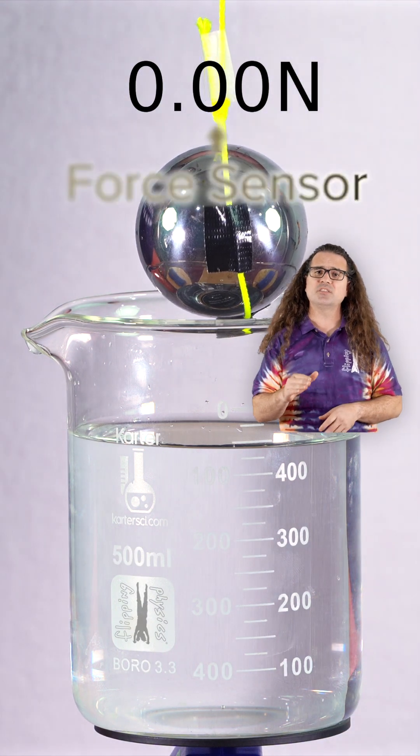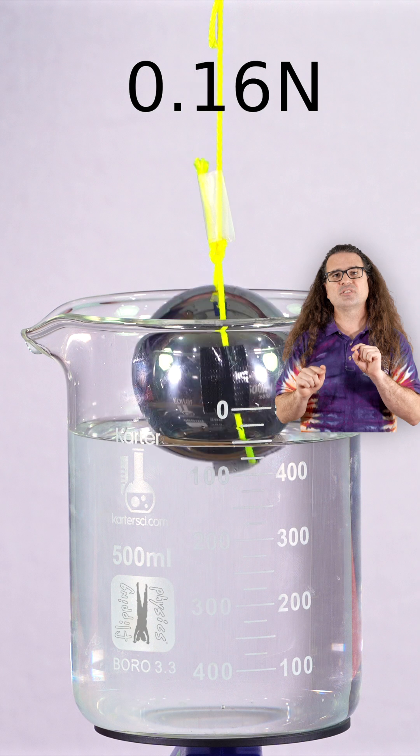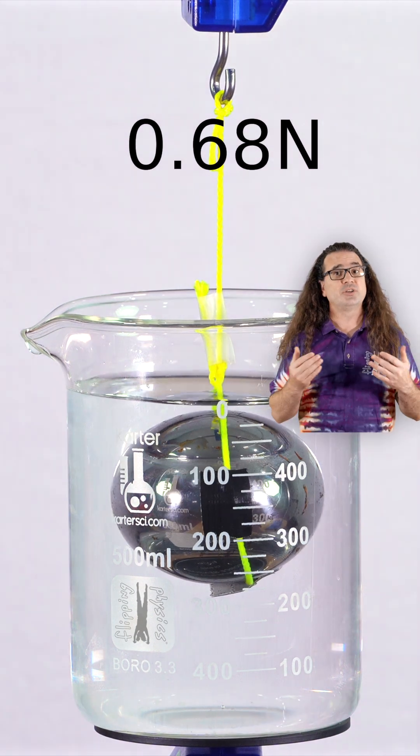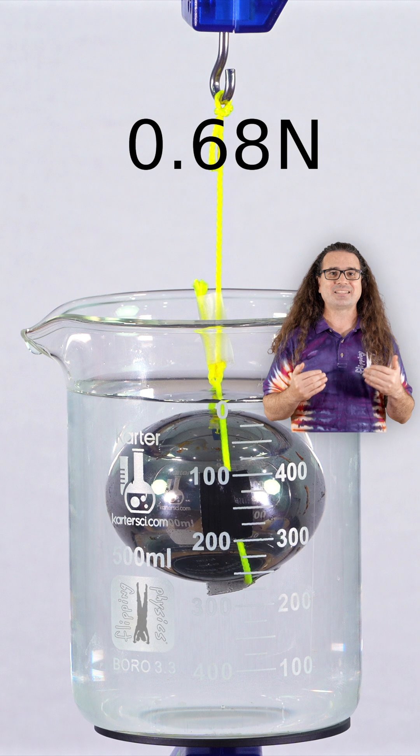When I lower the steel sphere into the water, once the steel sphere is submerged in the water the reading on the force sensor is 0.68 Newtons, which is the magnitude of the upward point force acting on the steel sphere.